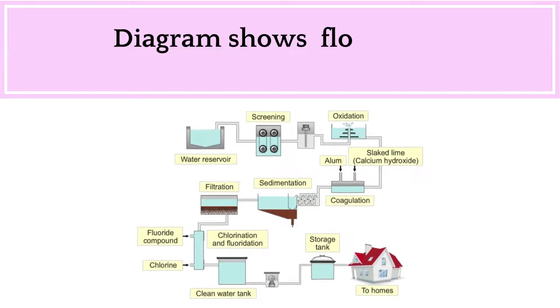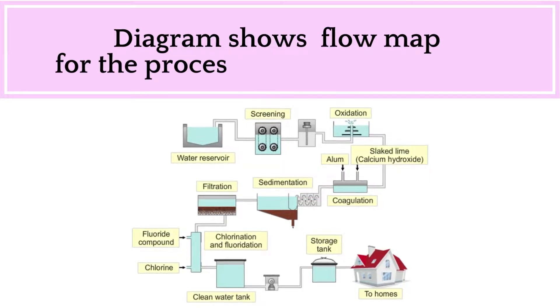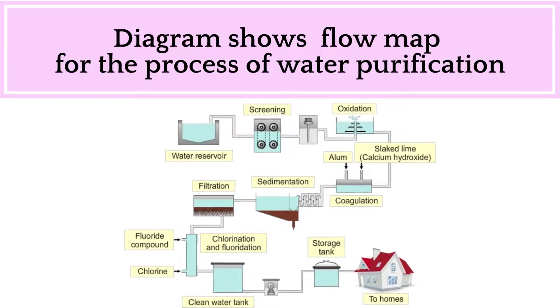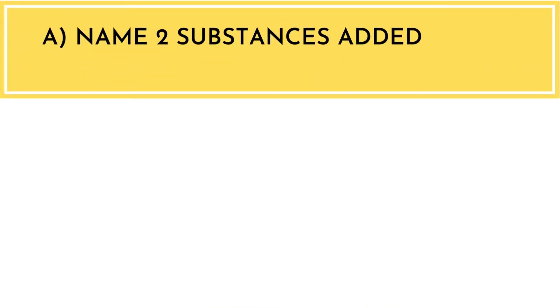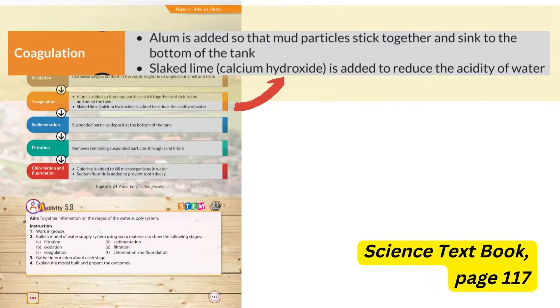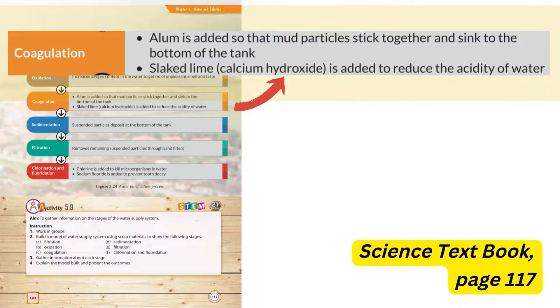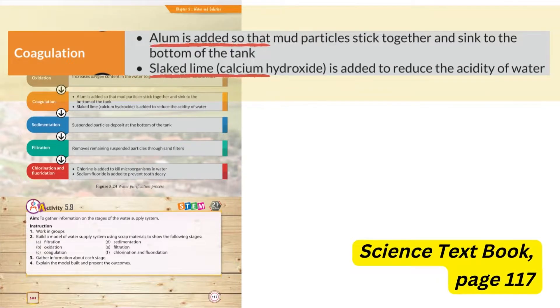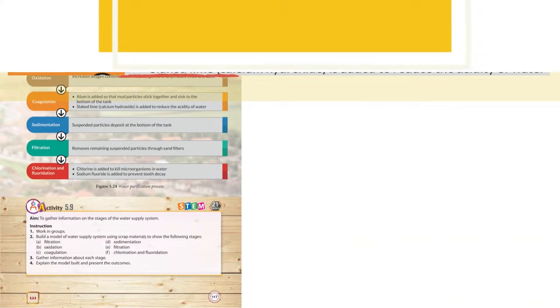The main question: the diagram shows a flow map for the process of water purification. Let's take a look at the first sub-question: Name two substances added to the coagulation tank. Let's refer to the Science Textbook, page 117. Here, we can see that in the coagulation process, alum and slaked lime are added.